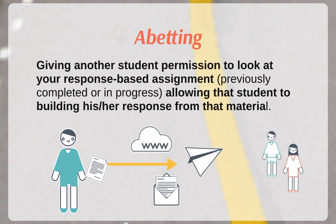The same thing goes when you're on the other side of the situation — this is called abetting. Giving another student permission to look at your assignment and allowing that student to build his or her response from that material is also an academic integrity violation. Your roommate might ask to look over a paper because she's having difficulty starting the assignment, but it's not worth the risk of being charged with academic dishonesty. You alone are responsible for safeguarding your work and for saying no when asked to share it with another student.